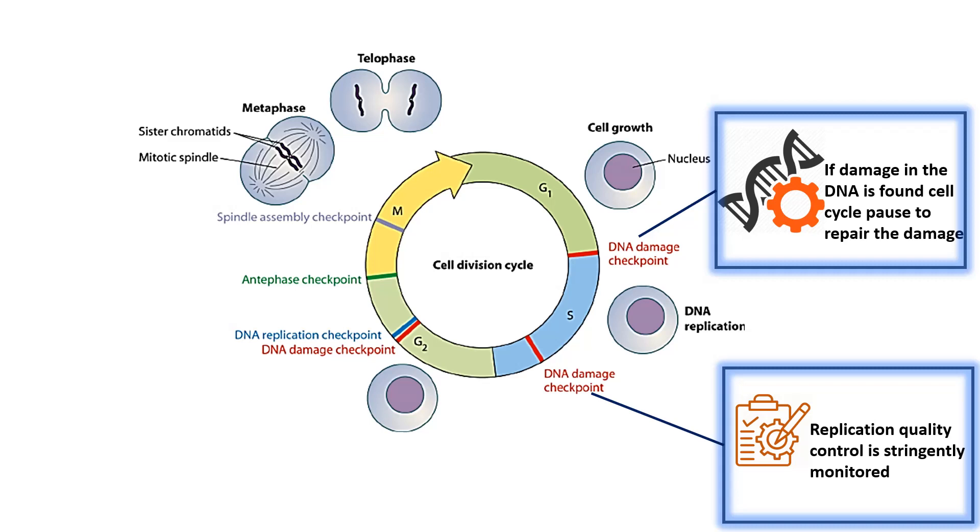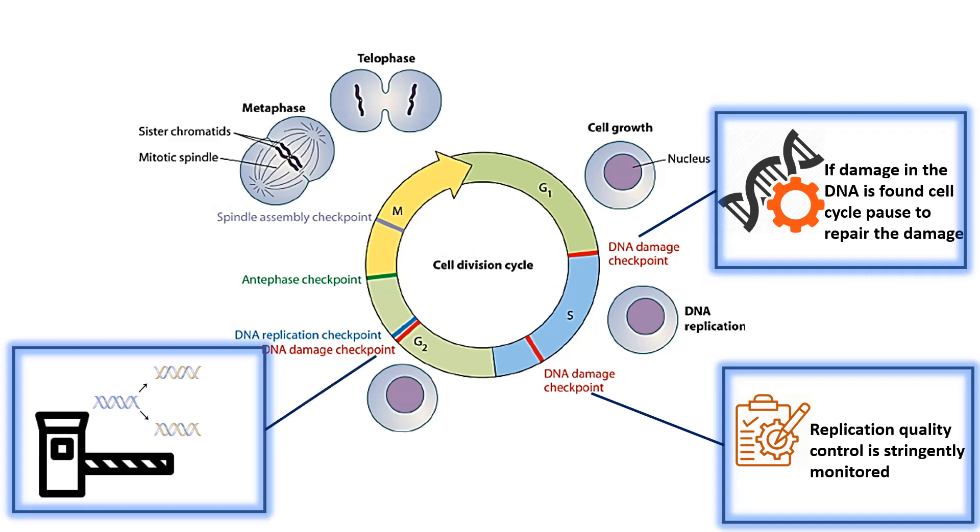The replication process has to be very precise and very stringently monitored. The DNA damage checkpoint in S phase does this job. Even after that, at G2 phase when replication is done, somebody needs to check that the replication has equally replicated the DNA and given rise to two identical copies. That is monitored by the DNA damage checkpoint in the G2 phase.